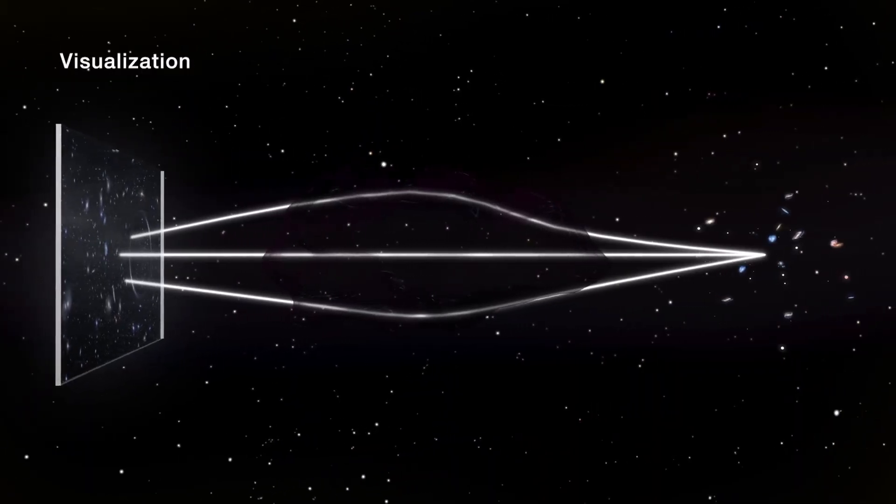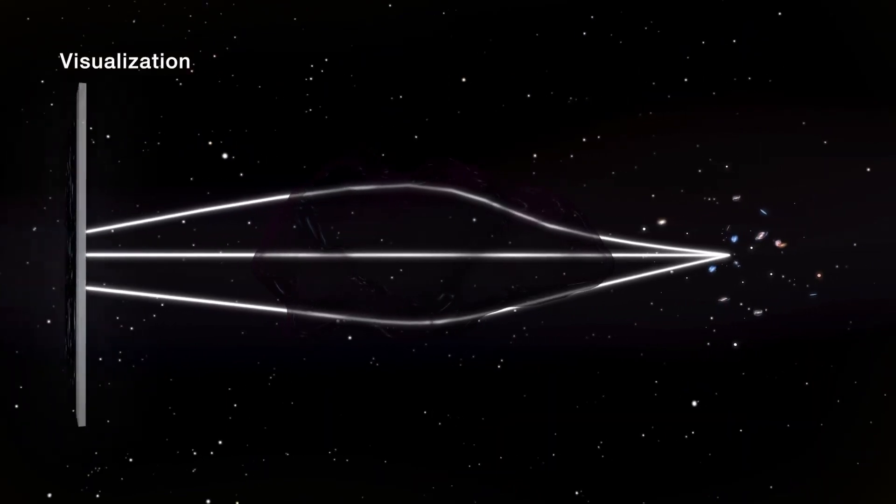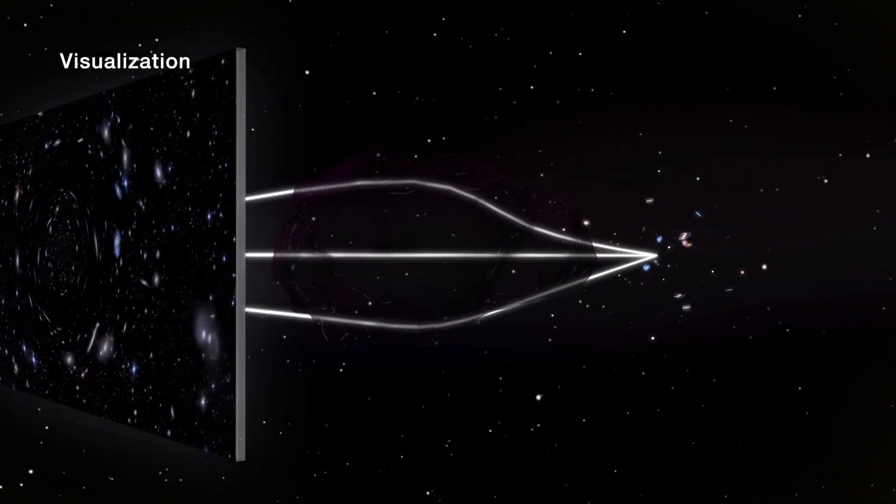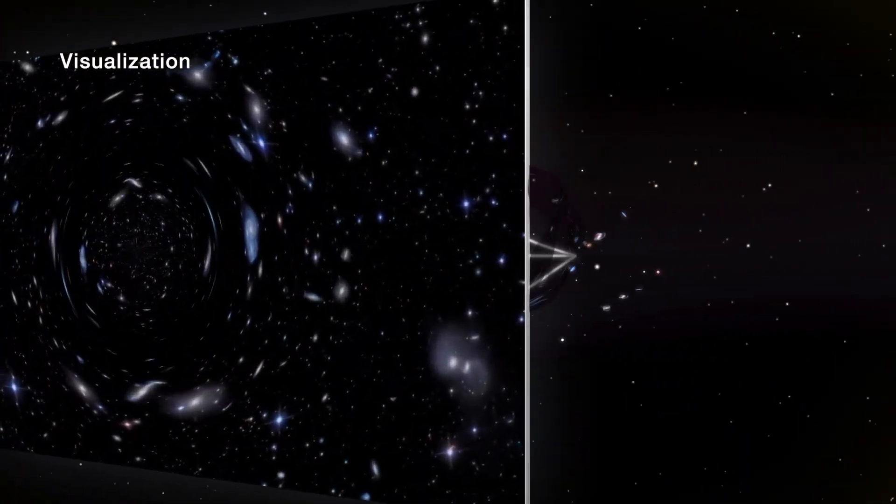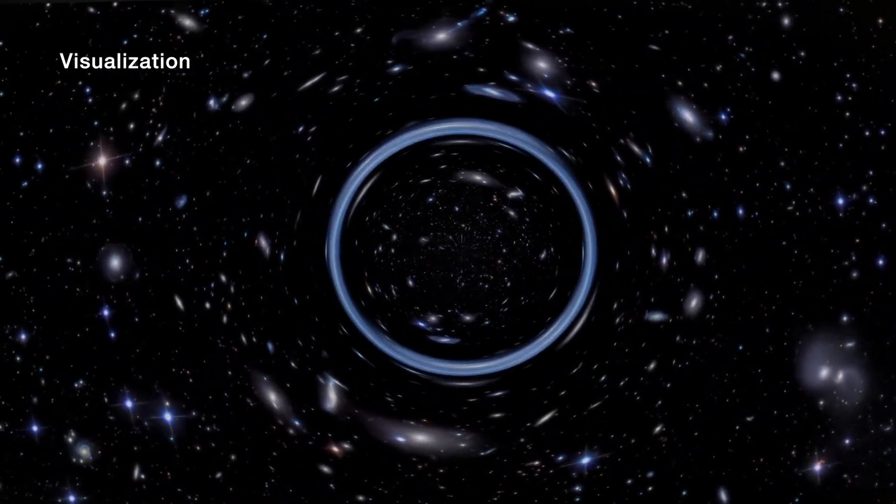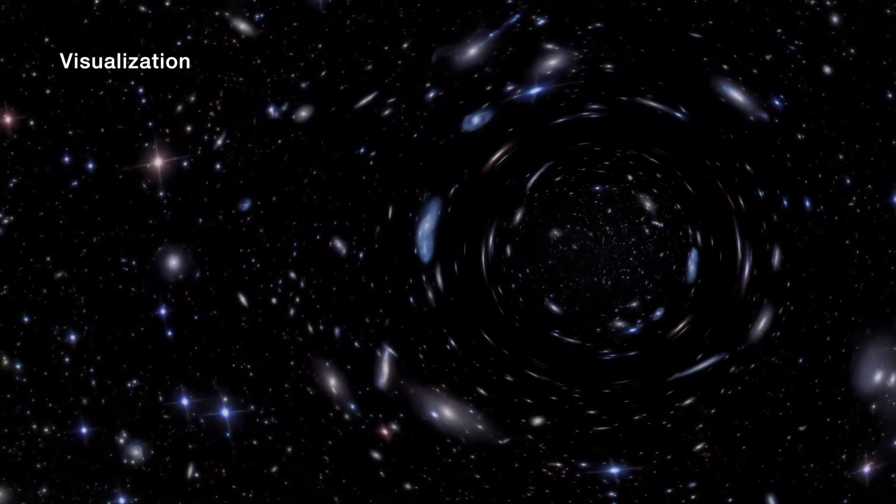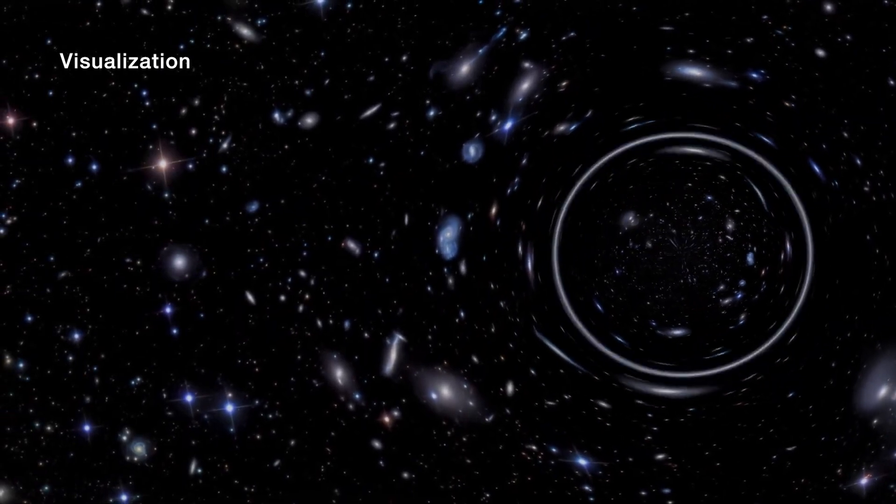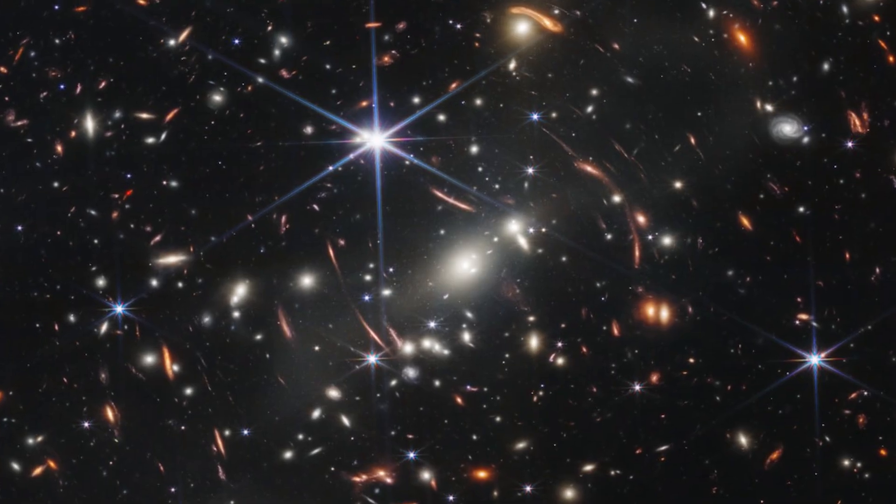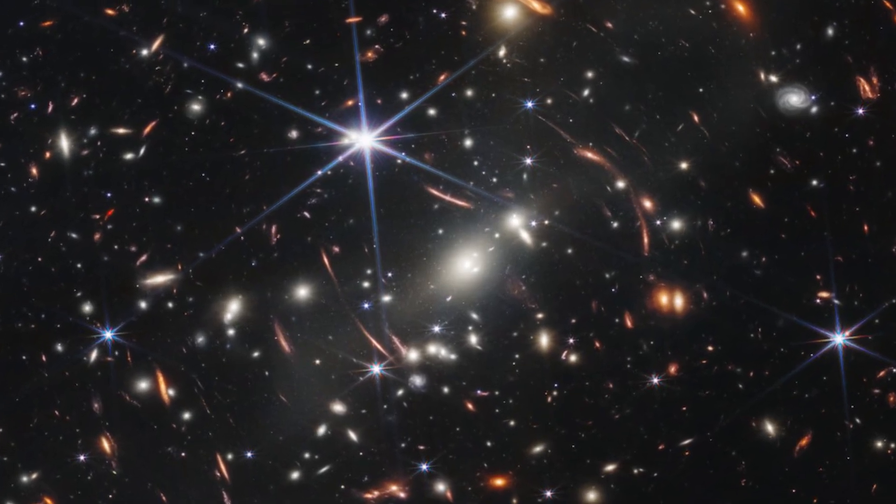SMACS-0723 is a particularly good target for this sort of observation because there are massive clusters of galaxies in the foreground. These act like giant cosmic magnifying glasses. Because of their immense mass, their gravity causes a pronounced curvature of space-time around them, with the effect of magnifying light from more distant objects.